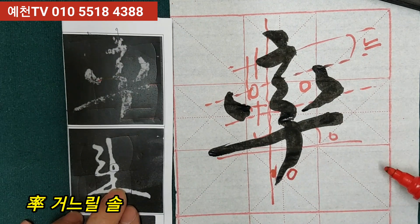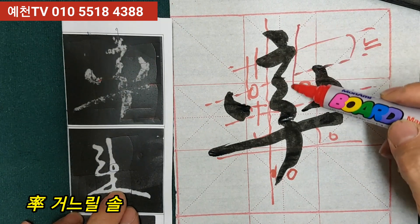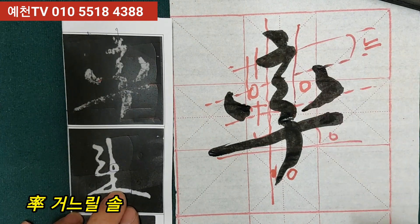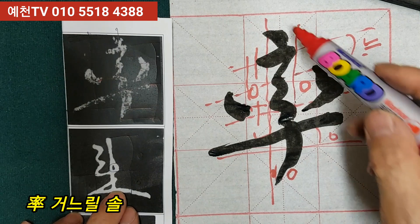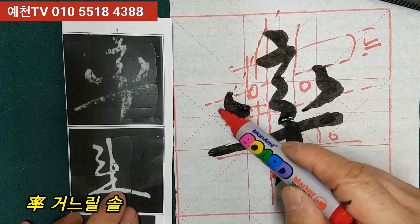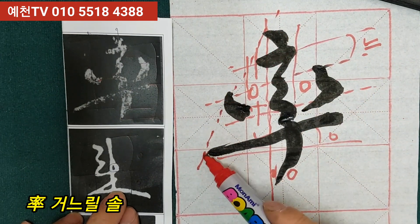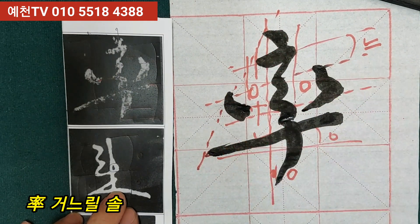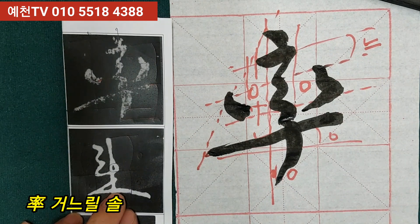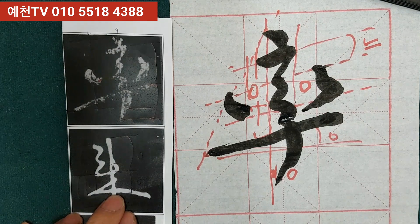이런 거를 잘 살려서 글씨를 써보시기 바랍니다. 여기는 이렇게 일직선이 됐죠. 그러면서 여기서 이렇게 걷을 때 여기하고 거의 이런 포인트가 서로가 맞아줘야 글씨가 안정감이 있습니다. 거느릴 솔자죠.